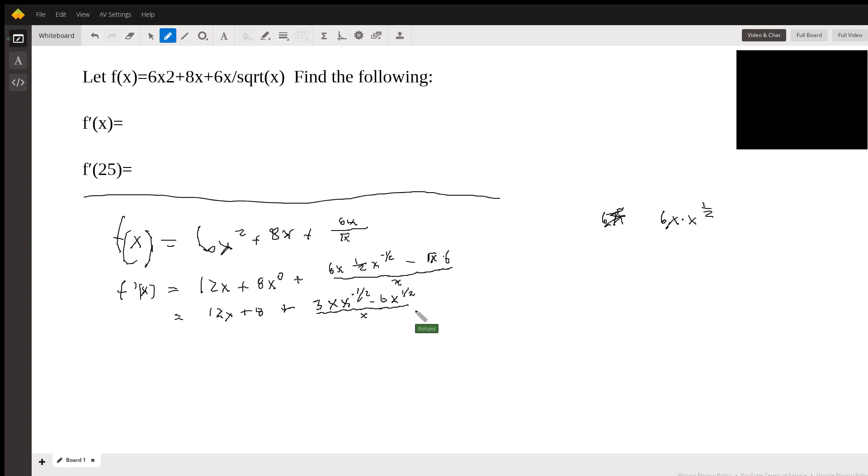And if we want to, we could simplify this further. 12x plus 8. Just split this up into two terms. You're going to get 3 over square root of x minus 6x to the negative 1 half. So I didn't realize that would simplify so quickly.